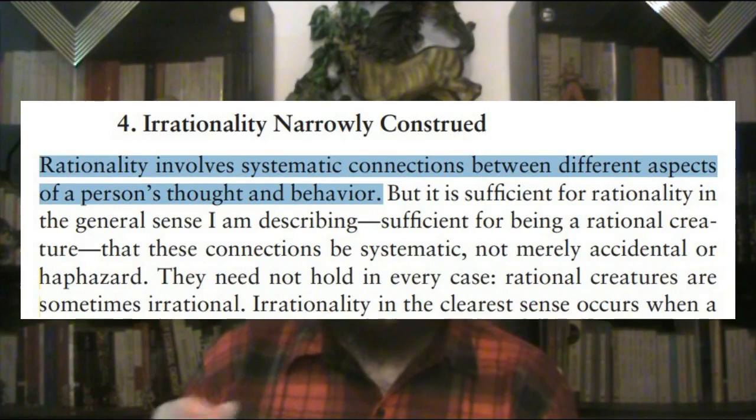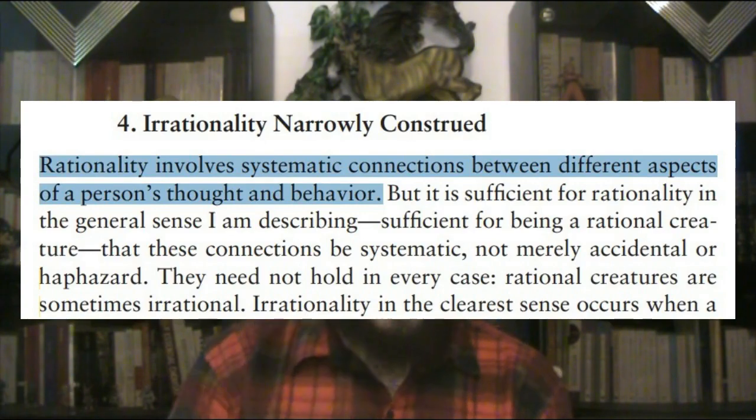What does this mean? It means that rationality isn't something that is disembodied, but is grounded in a lot of circumstances that can change or be perceived differently at different occasions. To quote Scanlon: 'Rationality involves systematic connections between different aspects of a person's thoughts and behavior.' Systematic connections means not merely accidental or random. This doesn't mean that your thoughts have to be true in order to be rational — just that they make sense and that your behavior and your thoughts are coherently connected.